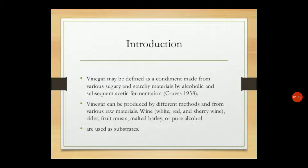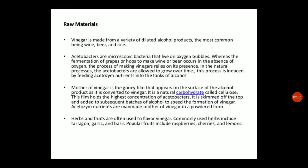We will produce vinegar from raw materials like wine, cider, fruits, barley, and pure alcohol. Vinegar is made from a variety of diluted alcohol products, most commonly wine, beer, and rice wine. We convert different alcoholic products using acetic acid bacteria to produce vinegar or acetic acid.